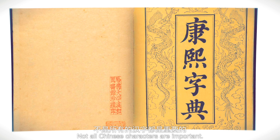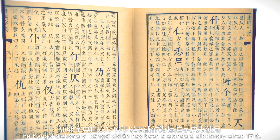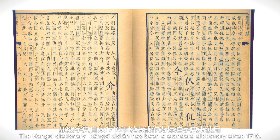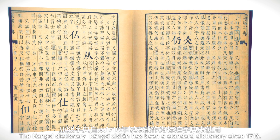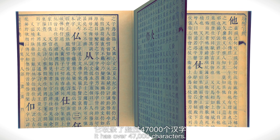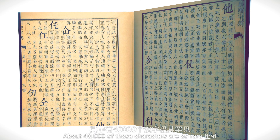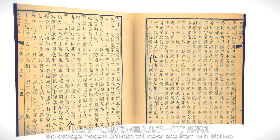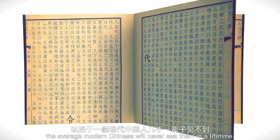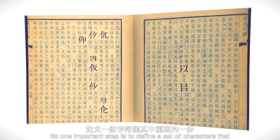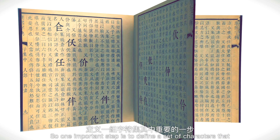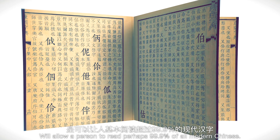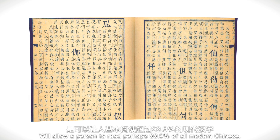Not all Chinese characters are important. The Kangxi Dictionary, Kangxi Zidian, has been a standard dictionary since 1716. It has over 47,000 characters. About 40,000 of those characters are so rare that the average modern Chinese will never see them in their lifetime. So one important step is to define a set of characters that will allow a person to read perhaps 99.9% of all modern Chinese.